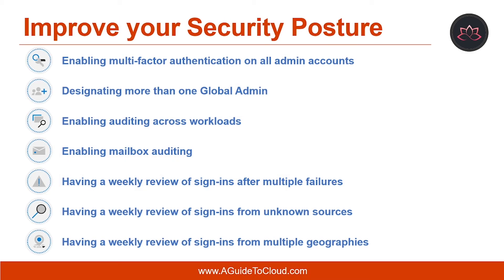Once you have used the Secure Score tool to determine the current state of your organization's security posture and identify the risks within your organization, the next step is to analyze your findings and plan how to improve your condition. During this planning process, you should consider the potential for risk, the difficulty of implementing proposed solutions, the timeframes for implementation, and the impact based on each Microsoft 365 Secure Score action.